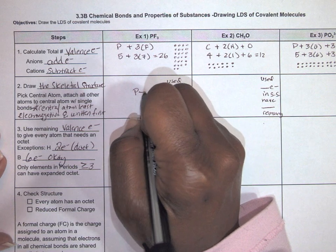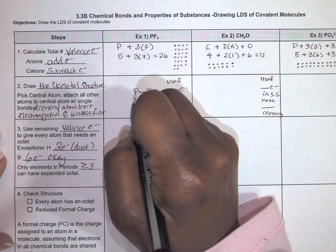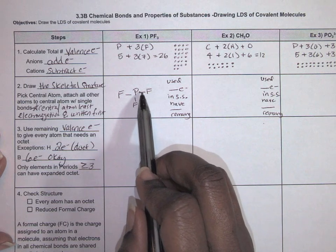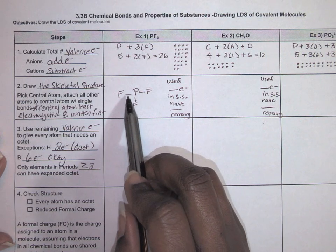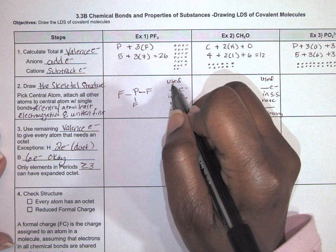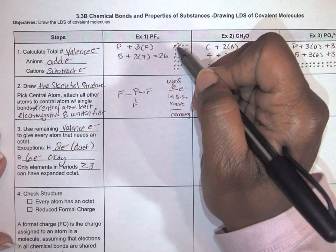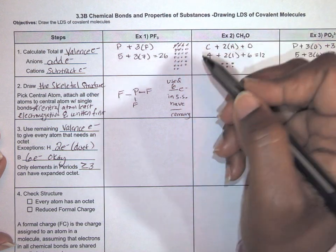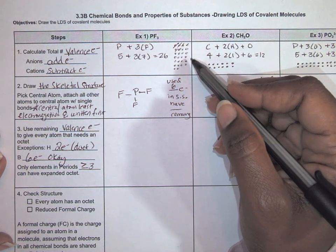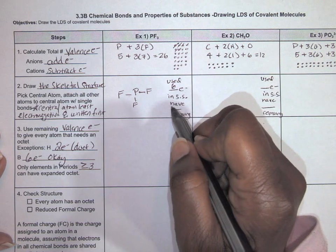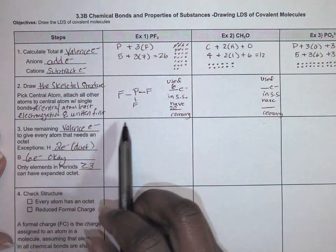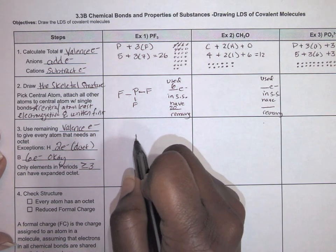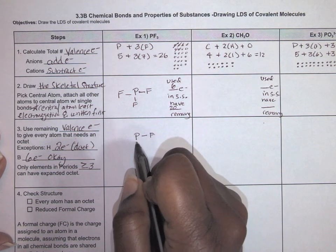We put phosphorus, which is the least electronegative, in the center, and attach the three fluorines with single bonds. When we did that, we used up six electrons — each bond has two electrons, and there are three bonds. Of the 26 total electrons, we now only have 20 remaining.